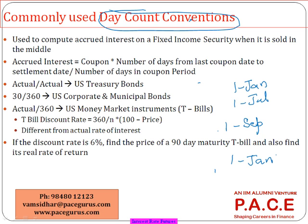If you look at it in slightly more detail, for those four months of holding, the new buyer is receiving the entire coupon. But for the two months I held the bond, I am not receiving any coupon, because the coupon goes to the owner, and the new guy is the owner. So what we are saying is: if I have to sell off the bond today, I should add up the interest for this two-month period as part of the selling price.